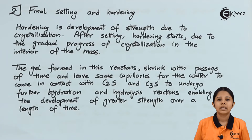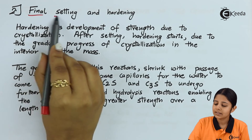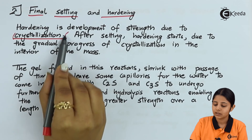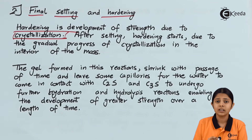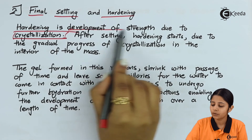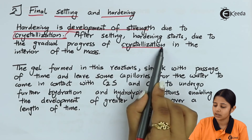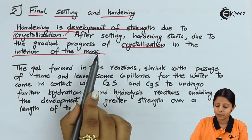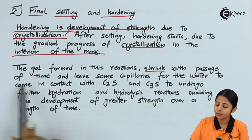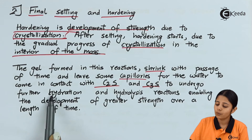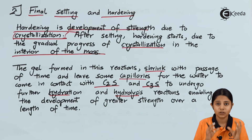On the reactant side, dicalcium silicate forms tobermorite gel and crystallized calcium hydroxide on the product side. This crystallized calcium hydroxide will set and harden and help in construction. Moving on to the final stage — hardening of cement: hardening is development of strength due to crystallization. After the setting step where crystallization begins, hardening happens as development of strength in the crystals already formed.